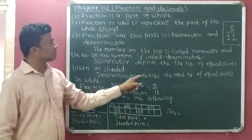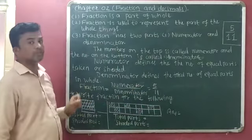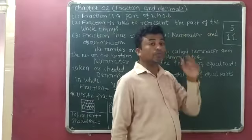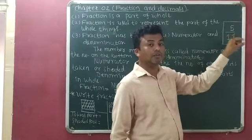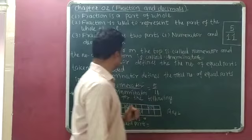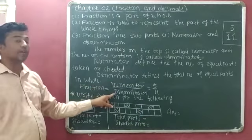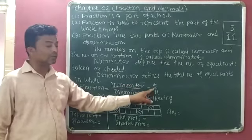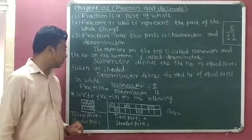Denominator defines the total number of equal parts in the whole. So here 11 parts are available in the whole, so 11 is the denominator. A fraction is equal to numerator divided by denominator — so in 5 by 11, 5 is the numerator and 11 is the denominator.